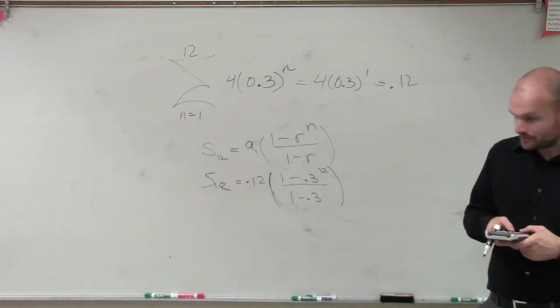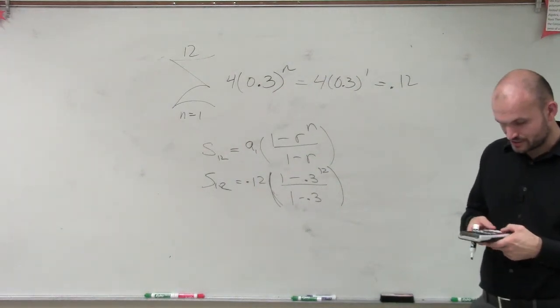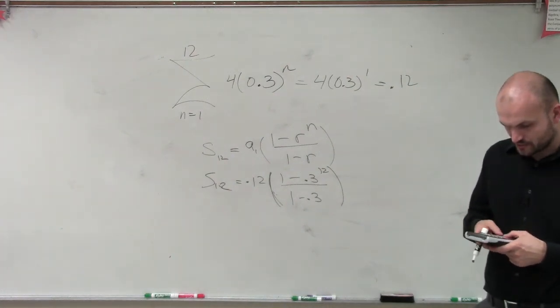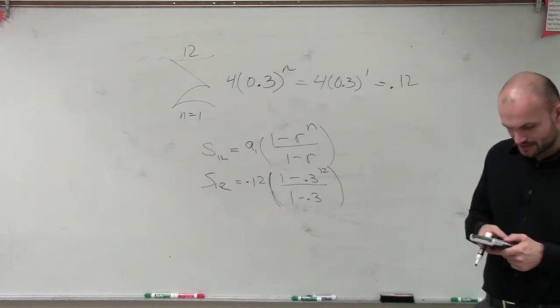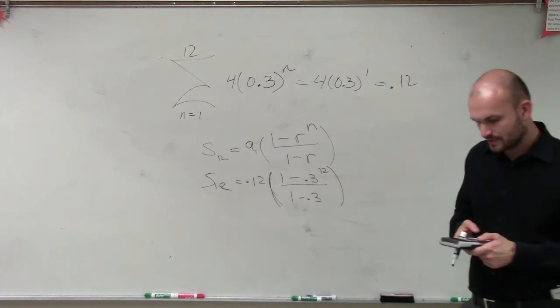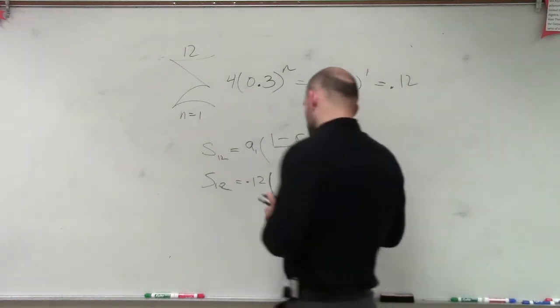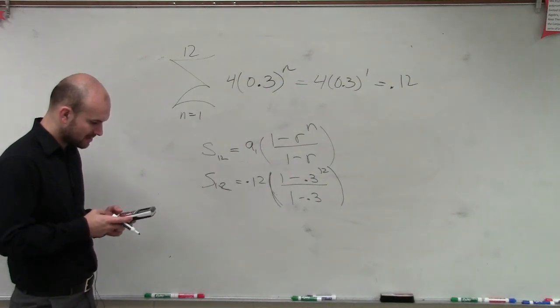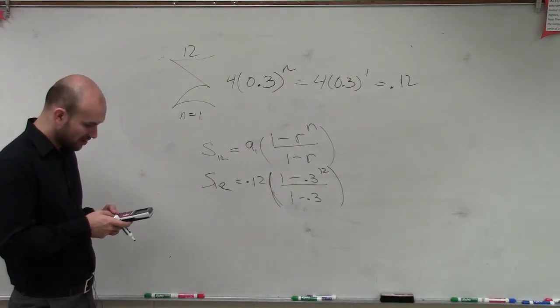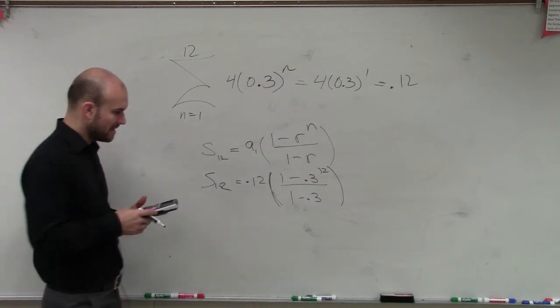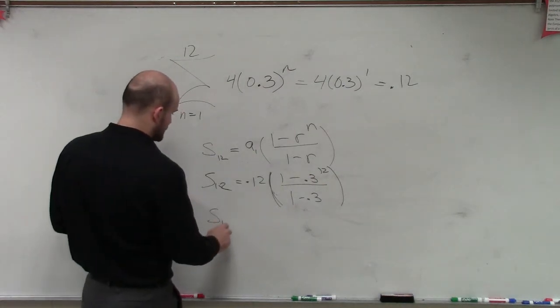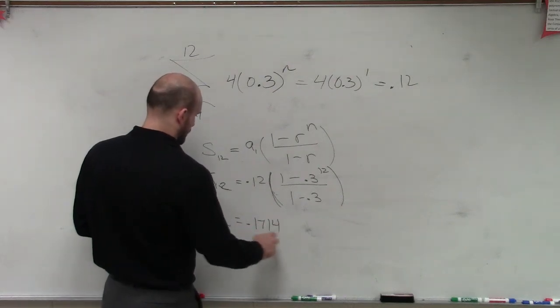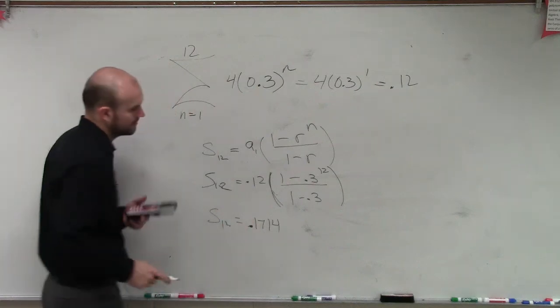So I'll just follow the order of operations. I'll do 0.3 raised to the 12th power. And then I'll do 1 minus second answer, which gives me 0.99999999. And then I will divide that by 0.7, and I get 1.22. And then I'll multiply that times 0.12. And my answer for the summation to 12 is going to be 0.1714.